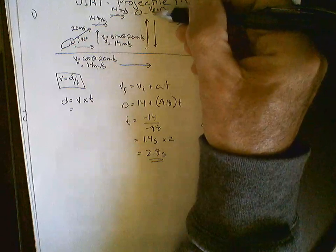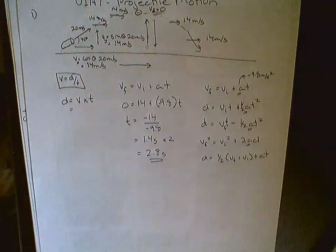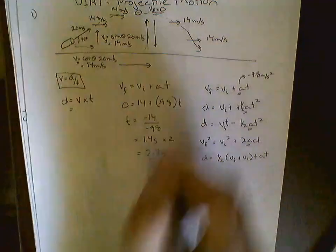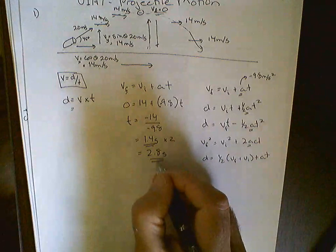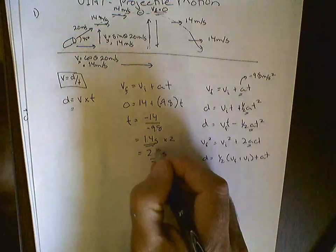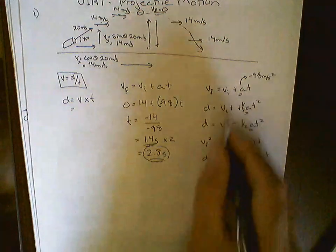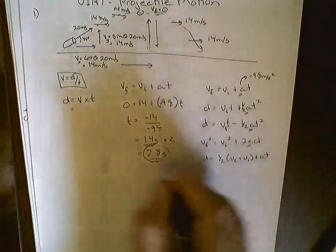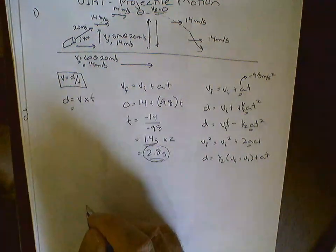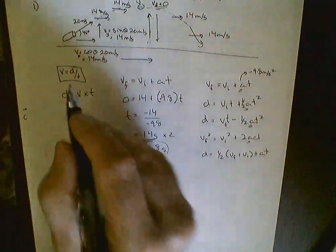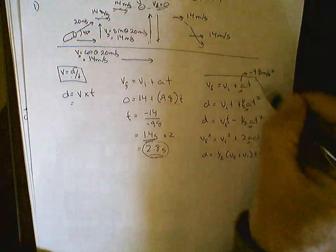Here's another important point about time. So the first important point is the time is the way up, we double it to get the total time. And time is the only thing that we can take from these calculations here, which are Y calculations, and we can put it over here because time is scalar, meaning it has no direction. We can use time in our X calculations and our Y calculations.